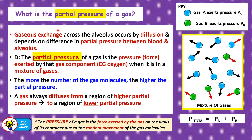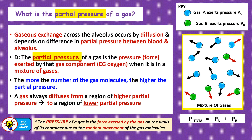First of all, let's try to understand the meaning of the term partial pressure — the partial pressure of a gas — because this term will be used in the explanations for gaseous exchange. Gaseous exchange across the alveolus occurs by diffusion and depends on the difference in partial pressure of a gas between the blood and the alveolus.